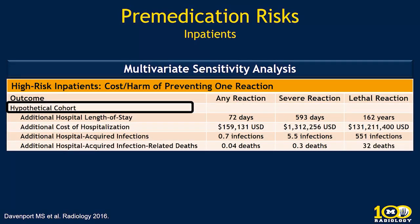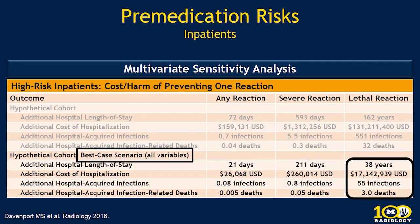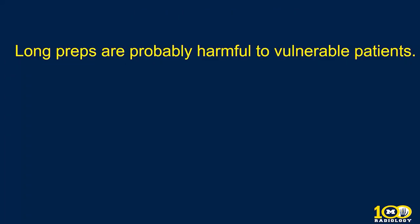Does doing long preps hurt more than they help? A hypothetical cohort using best evidence and best estimates of therapeutic benefit and potential harms found that to prevent one lethal reaction would require around 160 years of hospitalization, spending around $130 million, and contributing 500 infections and around 30 deaths from hospital-related infections. Even in the best-case scenario — maximum therapeutic benefit and minimum harm — we are still killing three times as many people by giving steroid preps as we are saving, because the effect size for a steroid prep is very small.